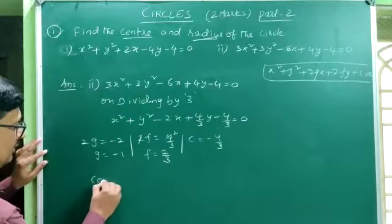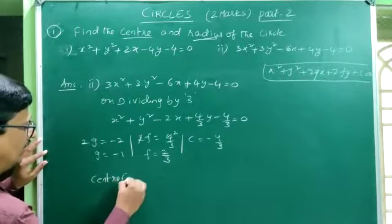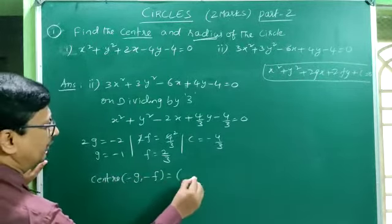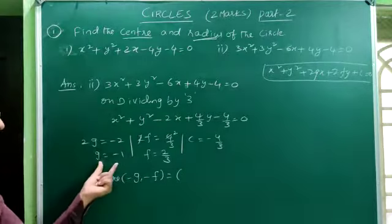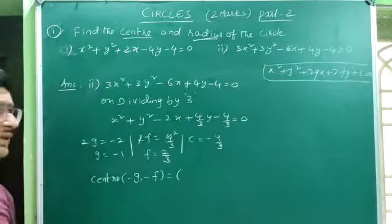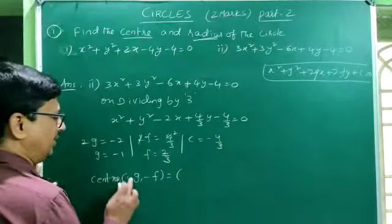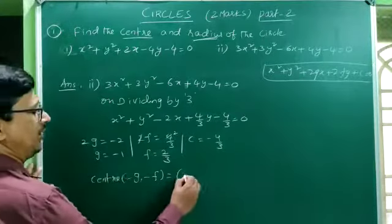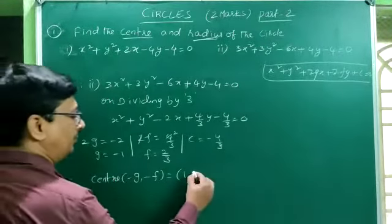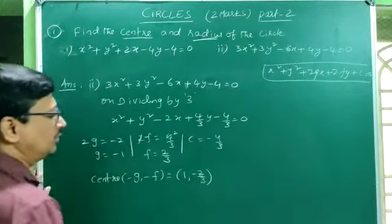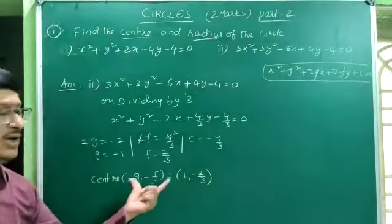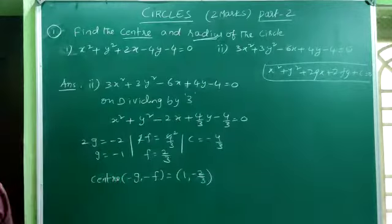Now the center. The center is (−g, −f). Here g = −1 and f = 2/3. So the center is (−(−1), −(2/3)) = (1, −2/3).